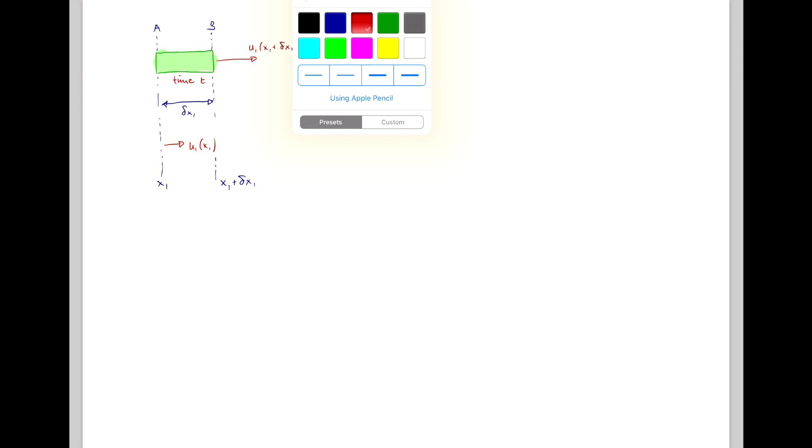Now at a later time, t plus dt, our fluid element has elongated. So here now we're at location a dash and b dash at time t plus dt,